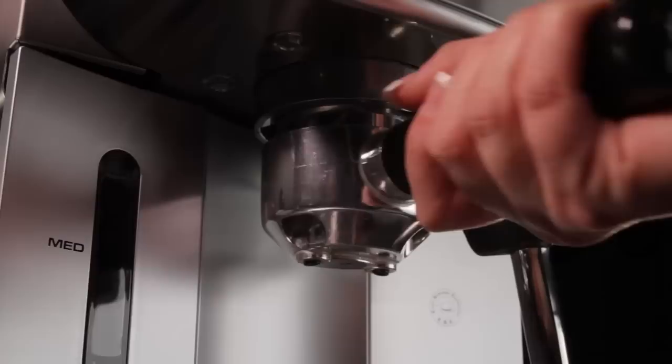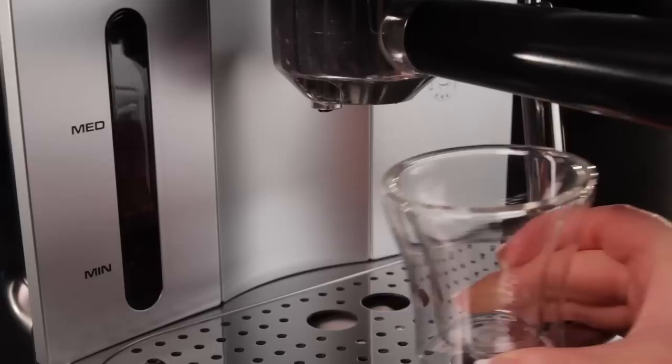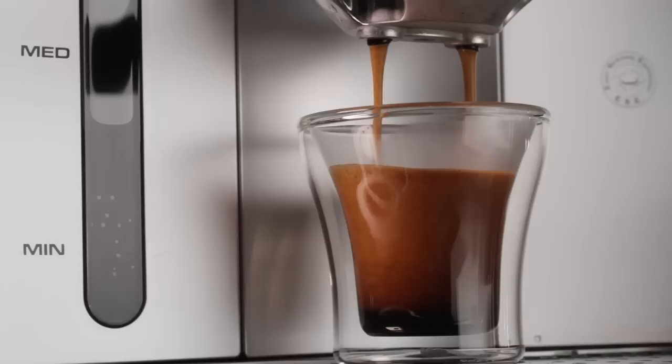I used to think you had to have a grinder to make good espresso, but with the pressurized basket, you can use pre-ground coffee or ESE pods. No tamping required. Just fill it with coffee or a pod, lock in the portafilter, and press a button.